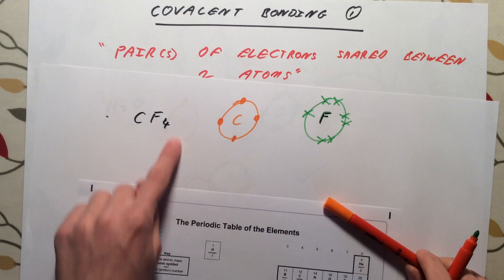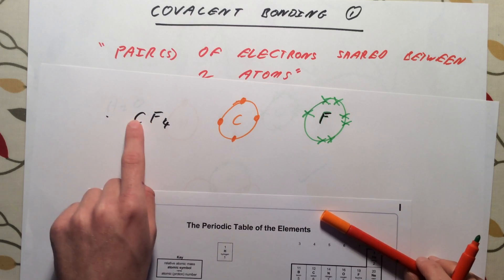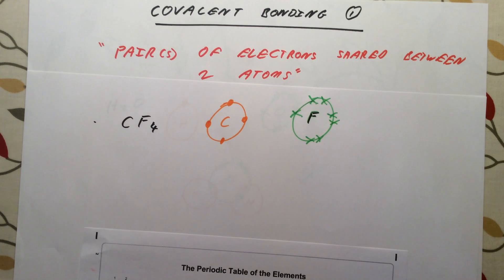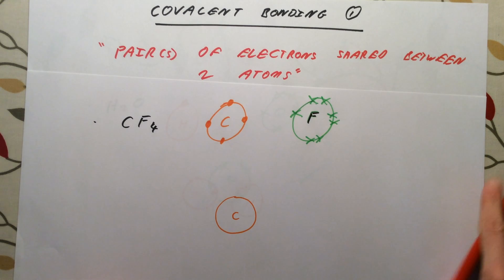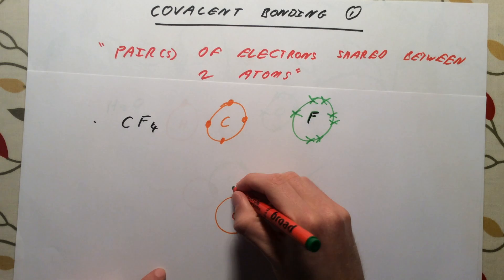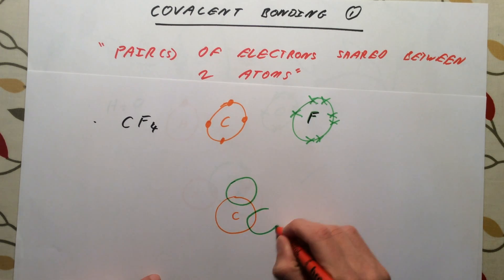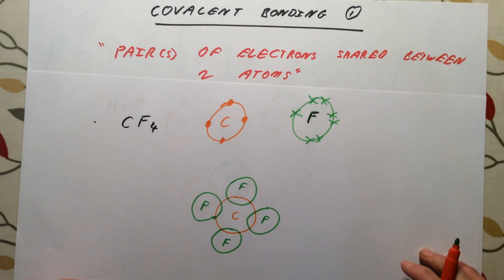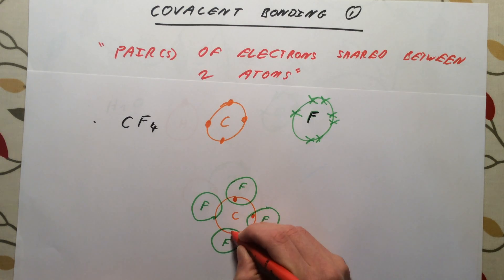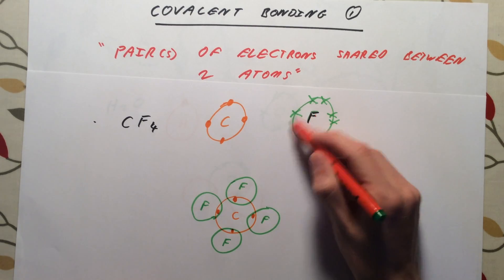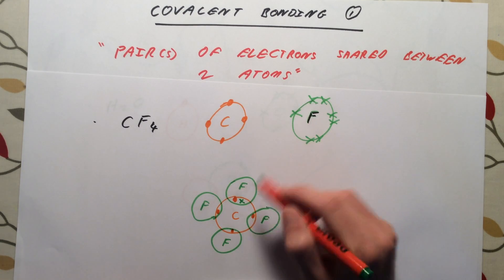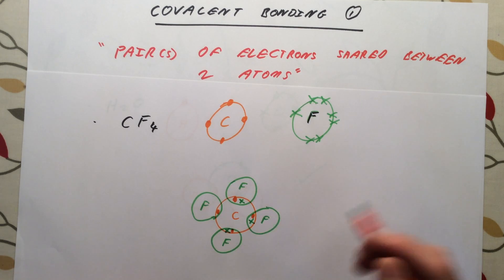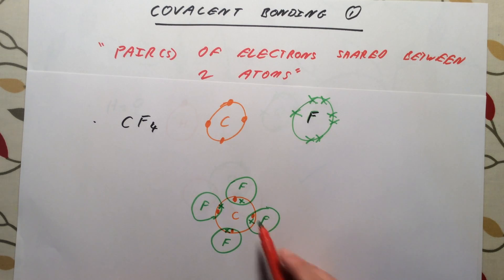In CF₄ I need 4 fluorines, with carbon going in the middle. I start by drawing my carbon atom in the centre, then draw 4 fluorines surrounding it, making sure there is an overlap between each fluorine and the carbon — like a Venn diagram. Now I add in the electrons. Carbon only has 4 electrons in its outer shell, so I place one carbon electron in each of the four shared areas. Then I place one electron from each fluorine atom in each shared section, forming the covalent bonds.